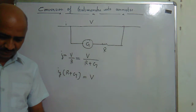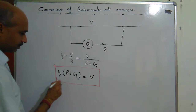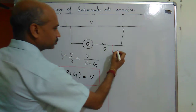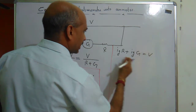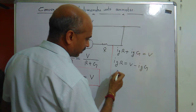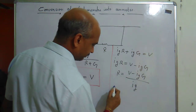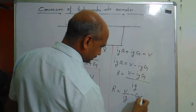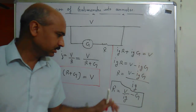If I need to find out the value of resistance R, I can make R the subject. From Ig × R + Ig × G = V, we get Ig × R = V − Ig × G, so R equals (V − Ig × G) upon Ig. This simplifies to R equals V upon Ig minus G. This is the value of R that we have calculated.